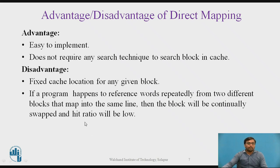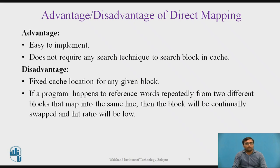The advantages and disadvantages: the advantage is that it is easy to implement because it does not require any searching technique to find a block in cache. If we need to find the 8th block, it will directly go to the 0th cache line and search there, since the 8th block of main memory is always mapped to the 0th line of cache. The disadvantage is fixed cache location for any given block: even if other cache lines are free, we cannot map the 8th block there — it must go to its designated line — meaning we are not fully utilizing cache memory.